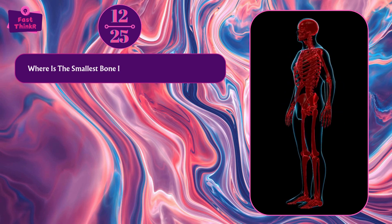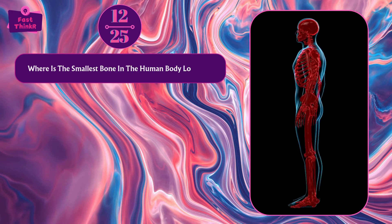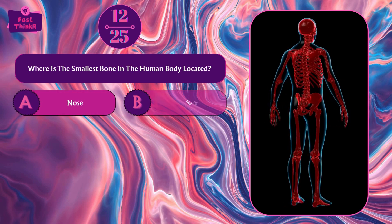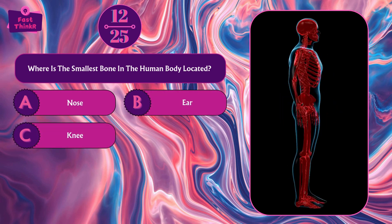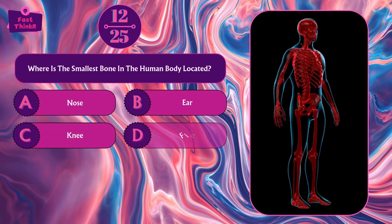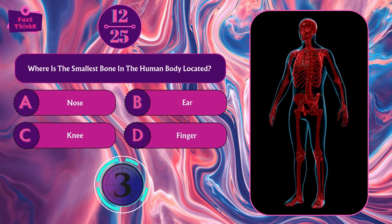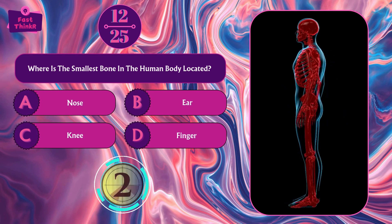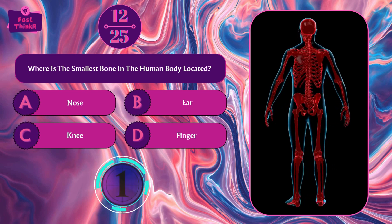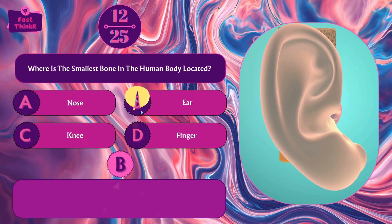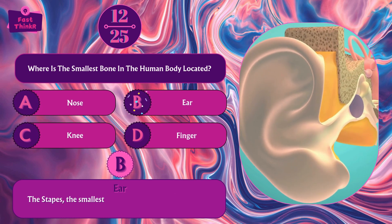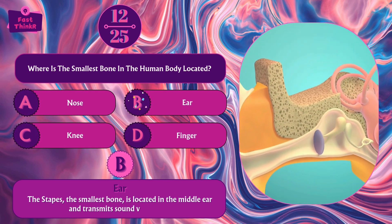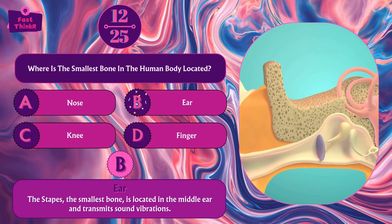Where is the smallest bone in the human body located? Nose, ear, knee, or finger? Option B — ear. The stapes, the smallest bone, is located in the middle ear and transmits sound vibrations.